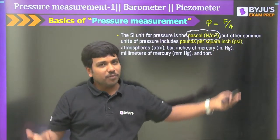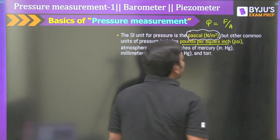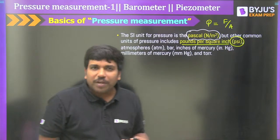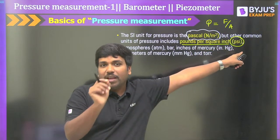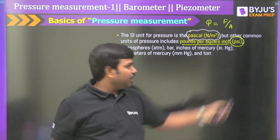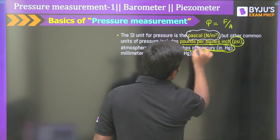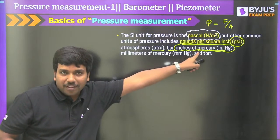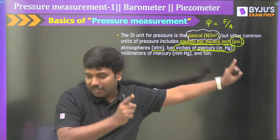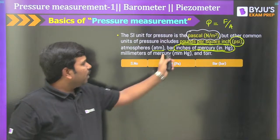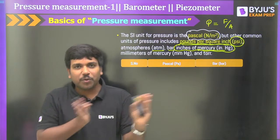The pressure formula is force per area. Force unit is Newton, area unit is meter squared, so pressure unit is Newton per meter squared. Another common unit is pounds per square inch — PSI. In instrumentation, when converting current to pressure and pressure to current, we use PSI. Other units include atmospheric pressure, bar, inches of mercury, millimeters of mercury, and torr.